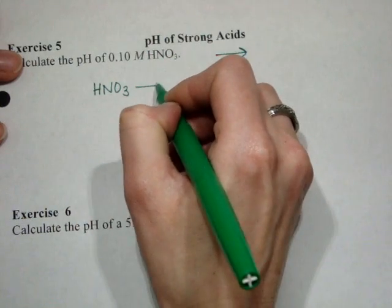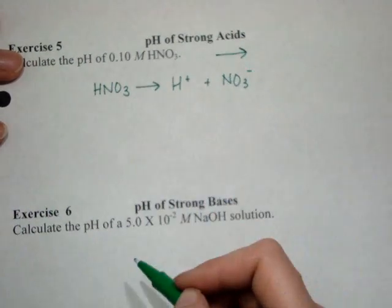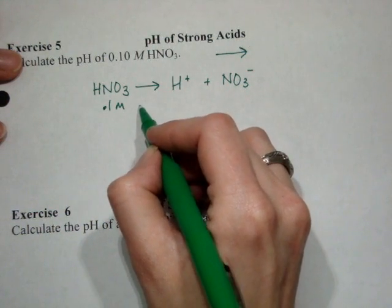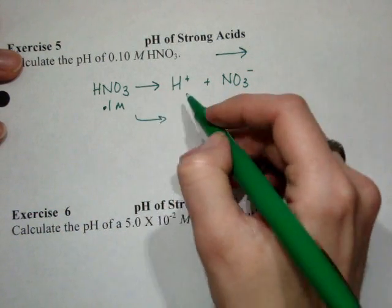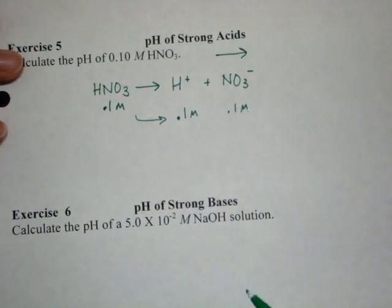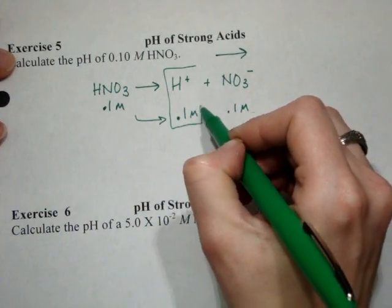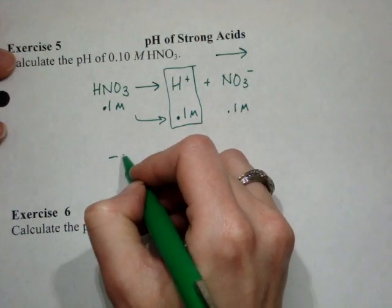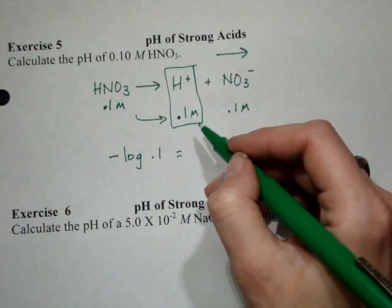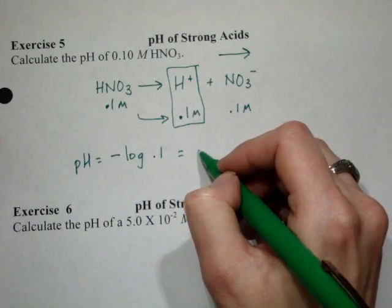So for instance, if we have nitric acid, that becomes the hydrogen ion and the nitrate ion. If I started off with 0.1 molar nitric acid, all of that dissociates into 0.1 molar acid and 0.1 molar nitrate ion. To figure out the pH, I just use my acid concentration. Negative log of 0.1 gives me pH. I need to put that over here. pH equals 1.